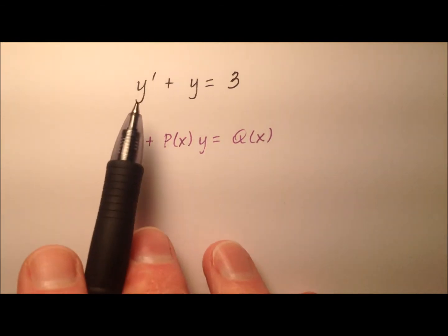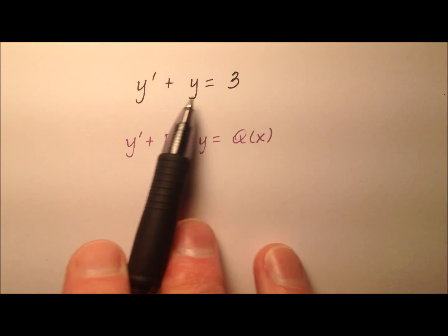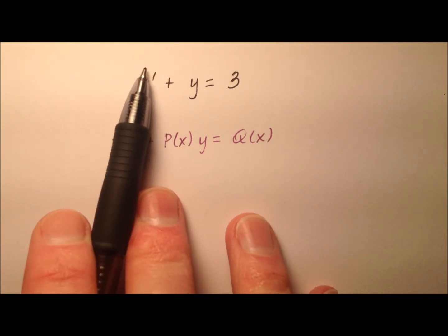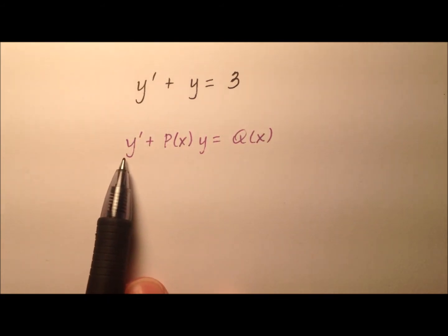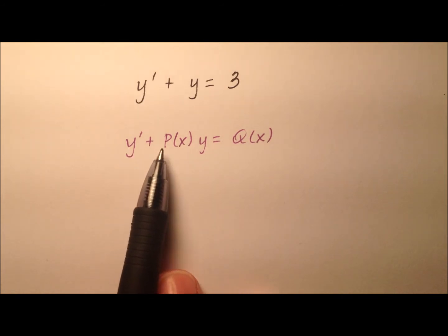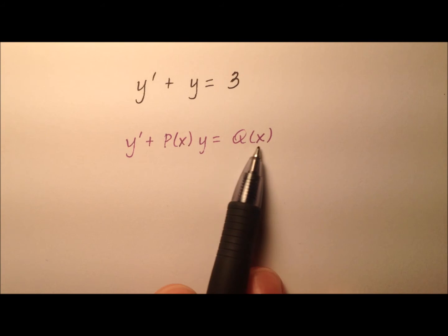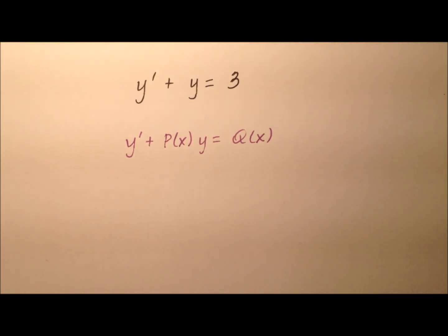In this example I'm going to solve this first order linear differential equation. It's first order because the highest derivative is the first derivative, and it's linear because it can be written in this form: y prime plus some function P(x) times y equals some function Q(x), where P and Q are both functions in x.